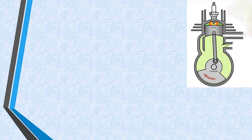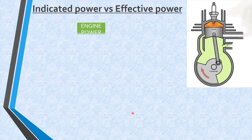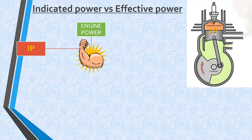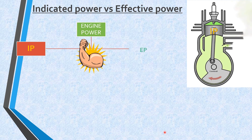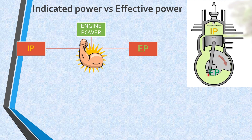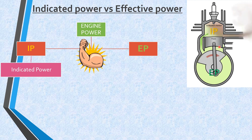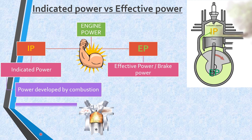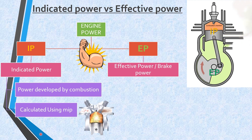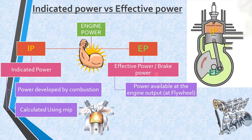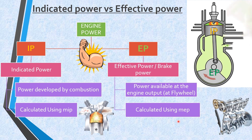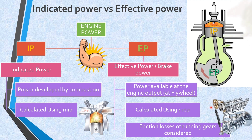Engine power can be divided into two groups: indicated power and effective power. Indicated power is the power involved in the combustion chamber — the fuel energy converted into mechanical energy using pressure and volume expansion. Effective power is the output at the engine crankshaft or flywheel. Indicated power is always greater than effective power because when we come to the crankshaft there are frictional losses in moving or running gears. Indicated power is calculated using mean indicated pressure (MIP); effective power — also called brake power, available at the flywheel — is calculated using mean effective pressure (MEP), after considering the frictional losses in the running gears.